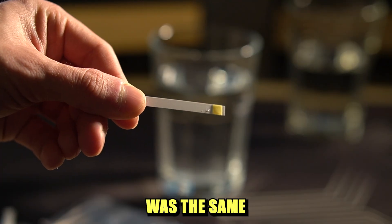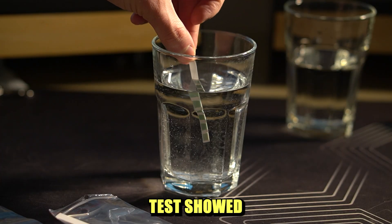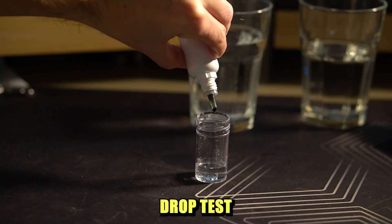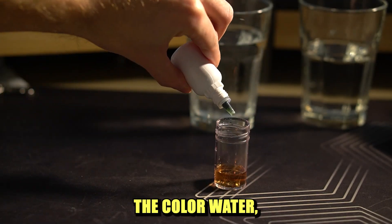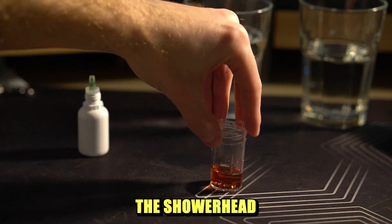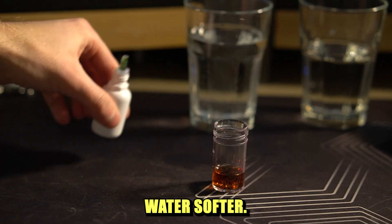The chlorine content was the same as well. The strip test showed no changes and a more accurate drop test showed that the same amount of drops were needed to change the color of water, meaning that the shower head didn't make the water softer.